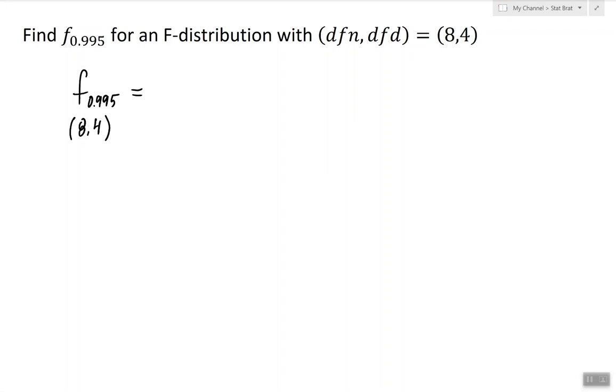So that means that F 0.995 is actually equal to the reciprocal of this value. So I simply subtract 0.995 from 1 to obtain that value.